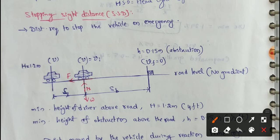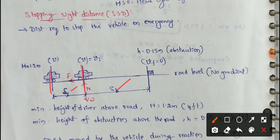SL means lag distance — that is, the distance traveled during the reaction time before braking begins. SB means braking distance — that is, the distance required to stop the vehicle after the brake is applied.